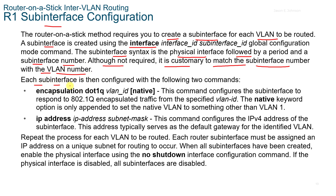Each sub-interface is configured with two commands: the encapsulation command, which configures the sub-interface to respond to 802.1Q encapsulated traffic from the specified VLAN — the native keyword option is only appended to set the native VLAN to something other than VLAN 1 — and the IP address command, which configures the IPv4 address on the sub-interface, typically serving as the default gateway for the identified VLAN. Repeat the process for each VLAN to be routed. Each router sub-interface must be assigned an IP address on a unique subnet for routing to occur, then enable the physical interface using the no shutdown command.